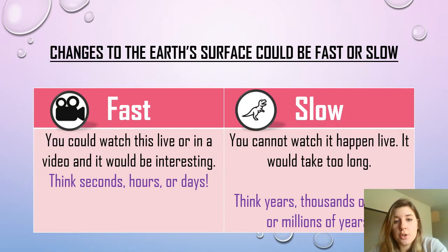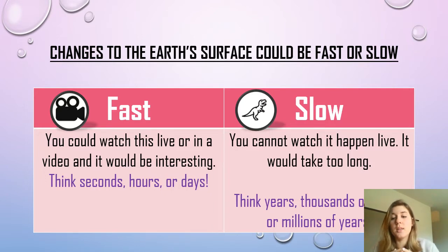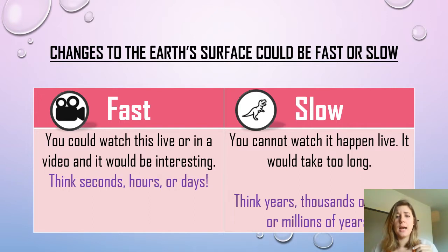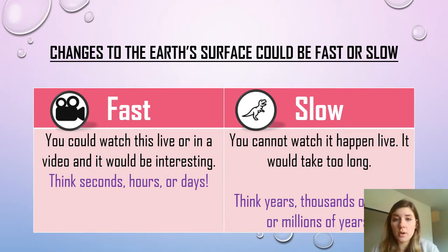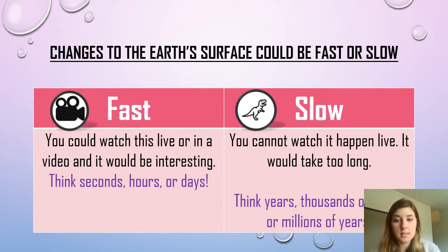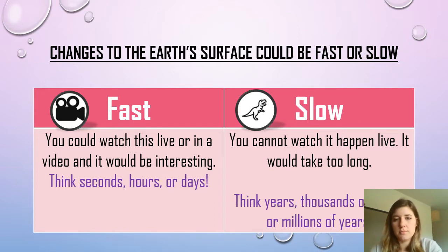You can have fast or slow changes. A fast one would happen in seconds, hours, or days — it'd be really interesting to watch. Whereas a slow change to earth's surface is going to take thousands of years or millions of years — a timeframe where you really wouldn't want to sit and watch.